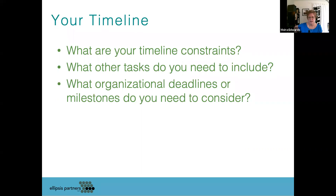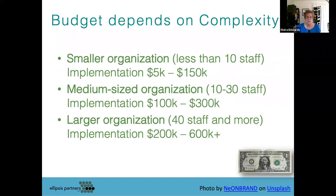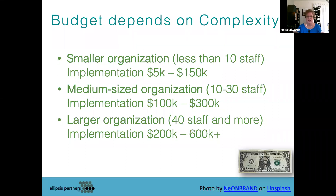Now I'm going to give you some honest figures from our experience, using the size of the organization as a proxy metric for complexity. In general, a five-staff association has less complex operations than a hundred-staff association. For a smaller organization — less than ten staff — you can expect implementation to be in a very wide range of five to $150,000. Why so wide? Because if you have one staff person, you're going to find an AMS you can just sign up for online and start using with very little implementation or data migration.